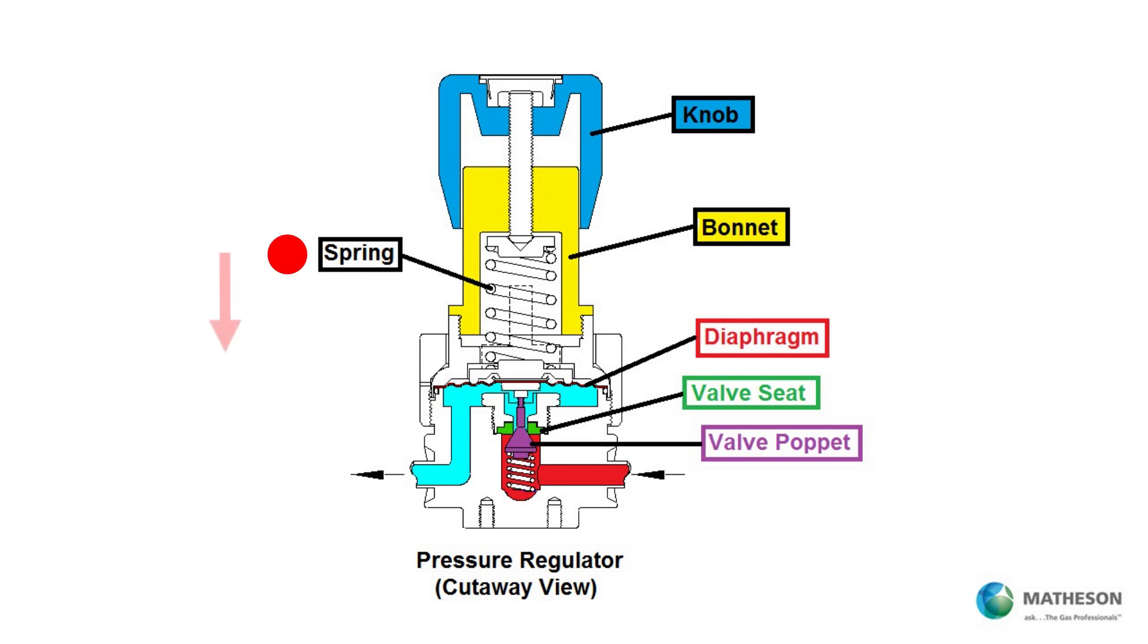When the spring is compressed, the spring displaces the diaphragm which pushes on the valve poppet, causing it to move away from the valve seat. The orifice becomes larger in order to provide the pressure and flow required. Increasing gas pressure under the diaphragm will push up on the diaphragm, allowing the valve poppet to close against the valve seat.